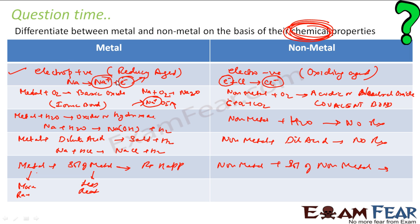So, to summarize the chemical property differences: metals are electropositive (more stable with positive charge) and non-metals are electronegative (more stable with negative charge). Metal + oxygen gives basic oxides with ionic bonds; non-metal + oxygen gives acidic or neutral oxides with covalent bonds. Metals react with water to give oxides and hydroxides; non-metals do not react with water. Metals react with dilute acids to give salt and hydrogen gas; non-metals do not react with dilute acids. Metal reacts with metal salt solutions via double displacement reaction when the reacting metal is more reactive.